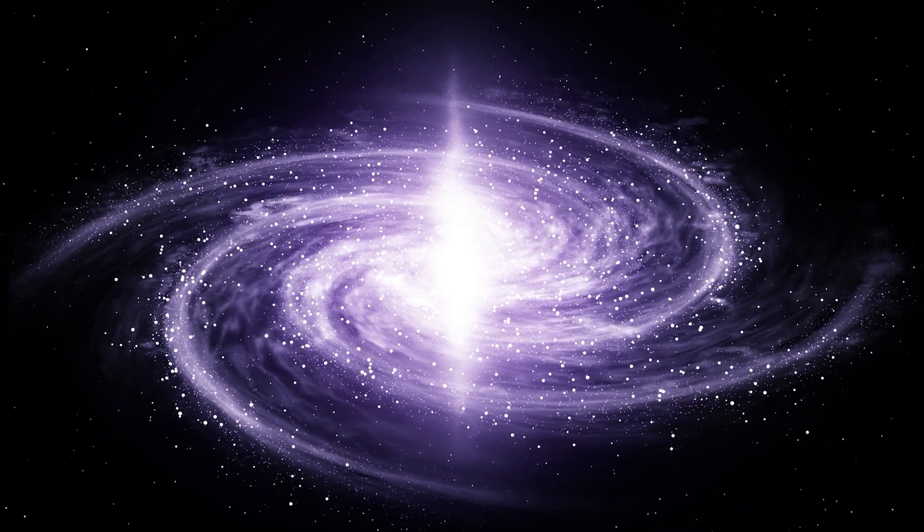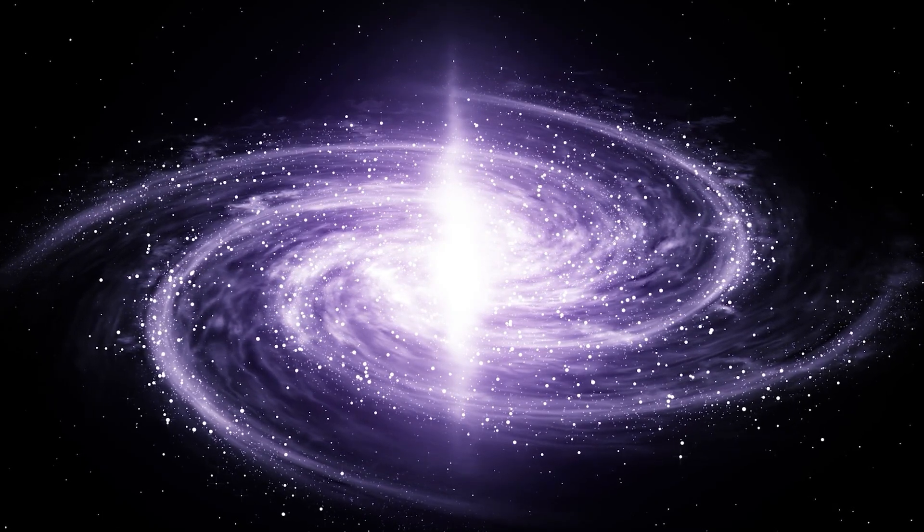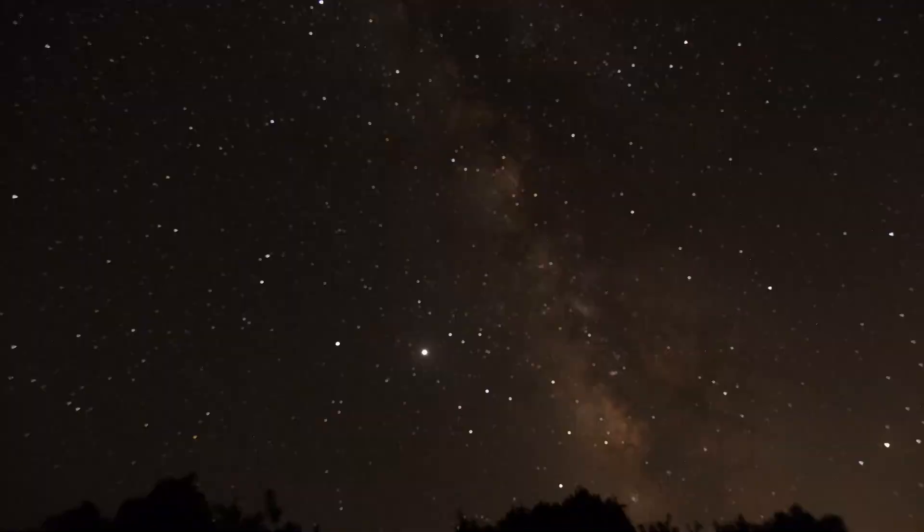Our solar system has been orbiting the Milky Way's black hole heart for 4.6 billion years. But it is hard to pin down exactly how many trips around the galaxy our sun has made during that time.